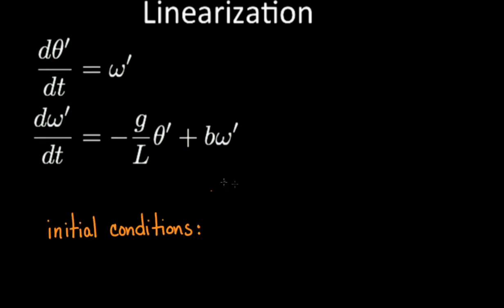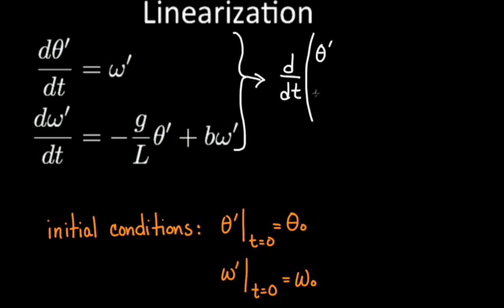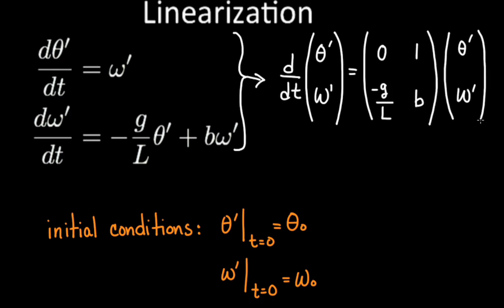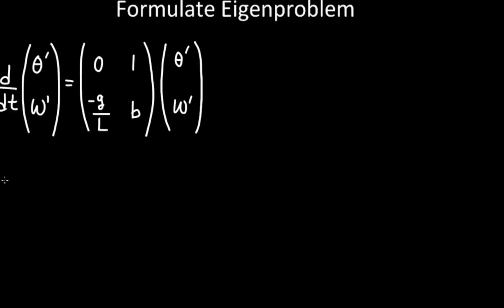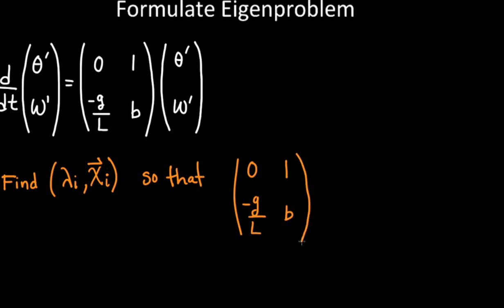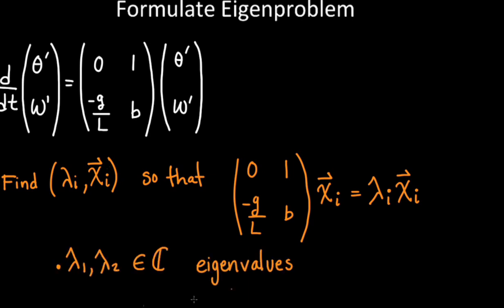We must supply initial conditions, and the initial angle and angular velocity must be small in order for this linearized system of equations to be applicable. We now write the linear equations in matrix form in order to prepare for the next step, formulation as an eigenproblem. To do this, we assume temporal behavior of the form e to the lambda t. This yields an eigenvalue problem for lambda. Note that our matrix is two by two, and hence there will be two eigenvalues, and two associated eigenvectors, or eigenmodes.